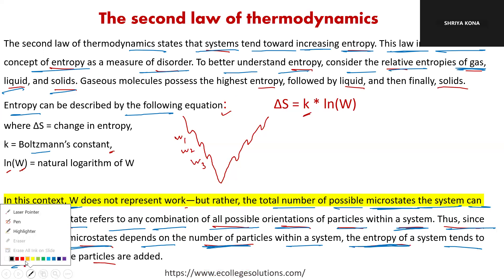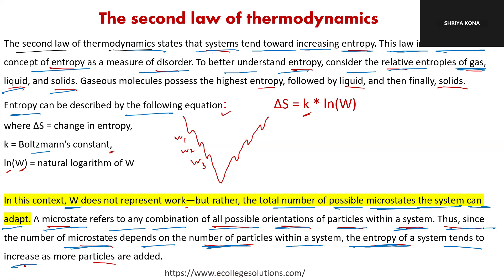We know the second law of thermodynamics from biochemistry — we talked about protein folding in relation to entropy. The second law states that a system tends toward increasing entropy. That means if things are getting more disordered, that is expected. The universe exists because the entropy of the universe is increasing. This law introduces entropy as a measure of disorder — the more disordered a system, the more entropy it has.